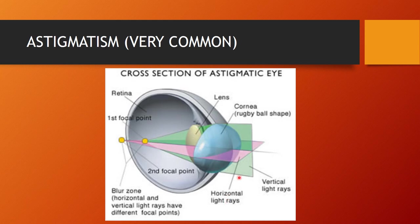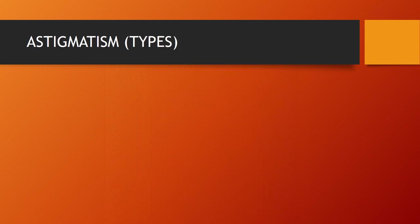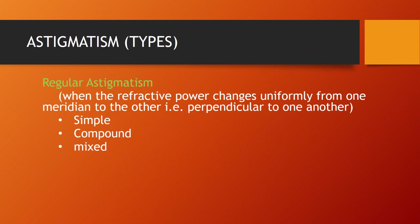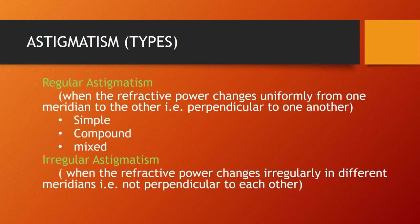A cross-section diagram of an astigmatic eye shows: in one meridian rays are focused in front of the retina (pink), in another meridian they are focused behind the retina, and in a third meridian (green) the power is greater so they are also focused in front of the retina. This creates a blur zone where horizontal and vertical light rays have different focal points. Regular astigmatism types are simple, compound, and mixed.